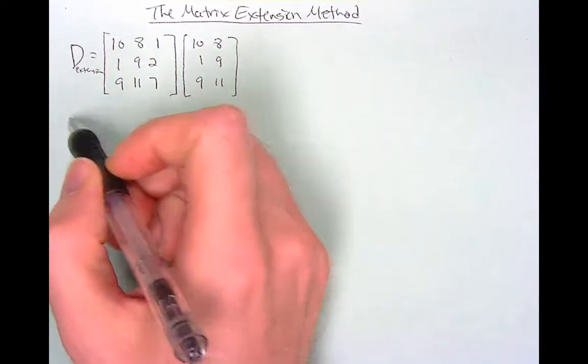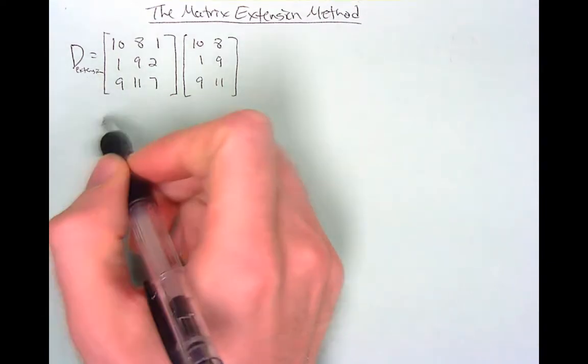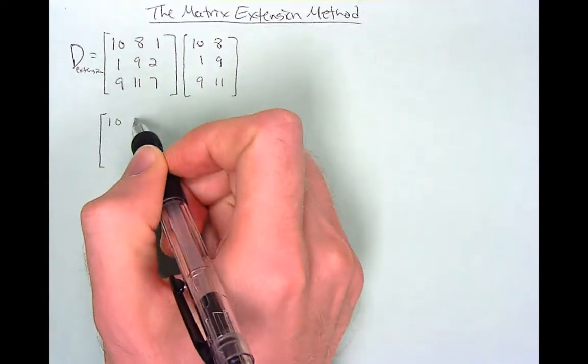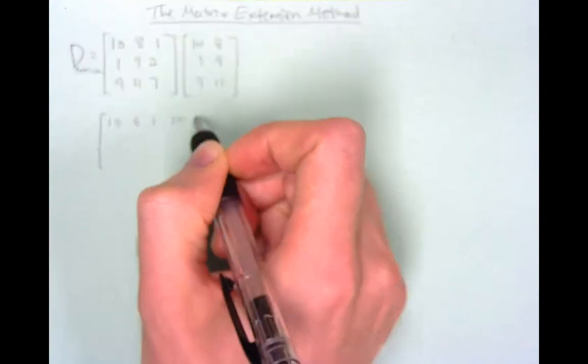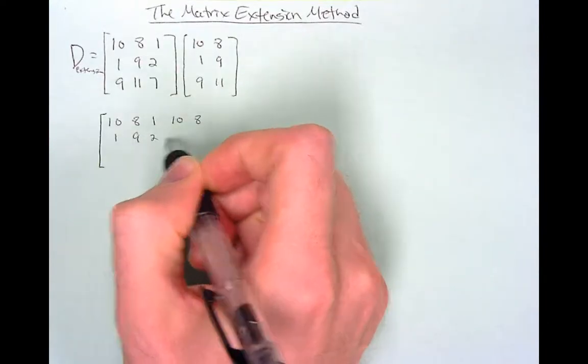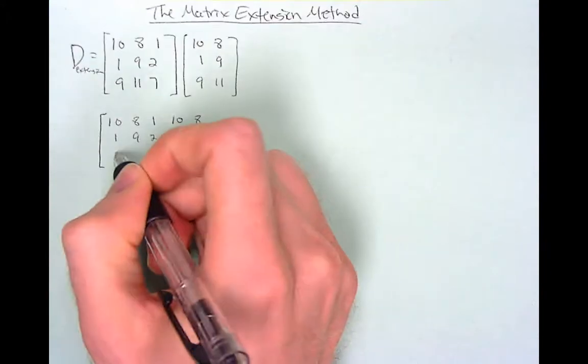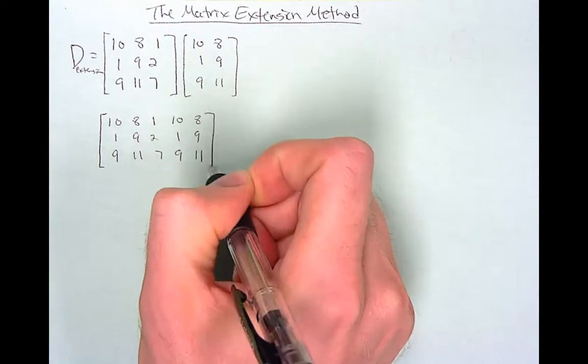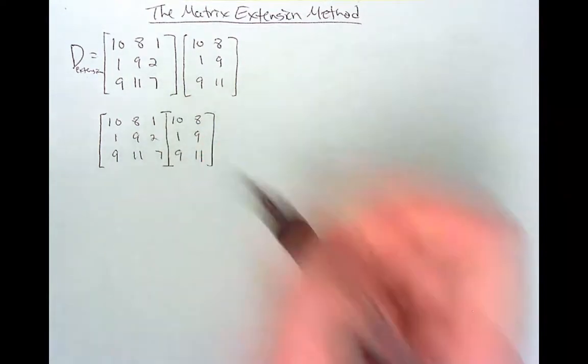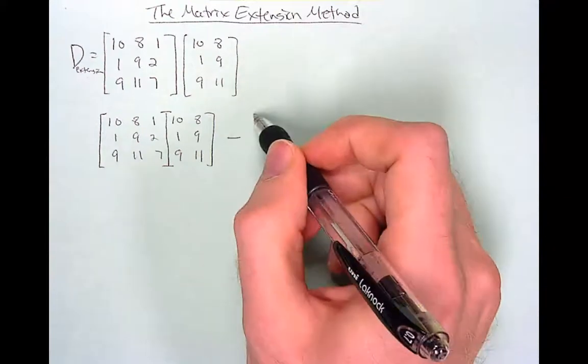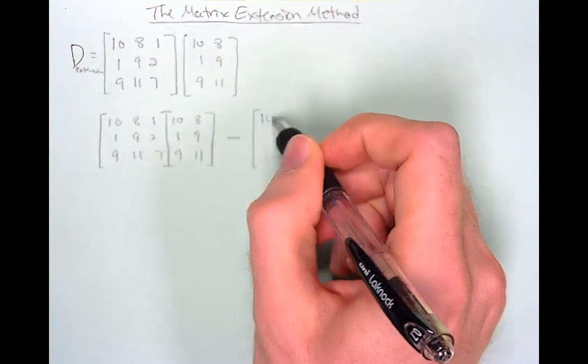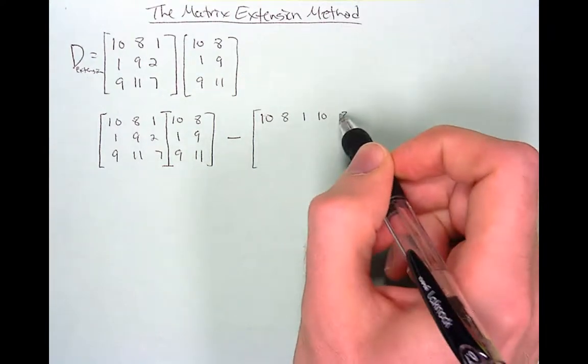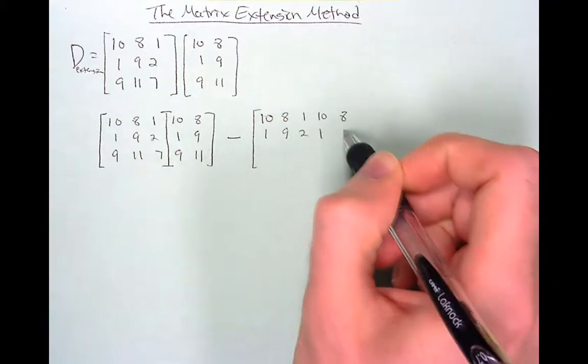I'm going to write this again. We've got 10 8 1 and over here we've got 10 8 again, 1 9 2, 1 9, 9 11 7, 9 11, and we're going to be subtracting the value.